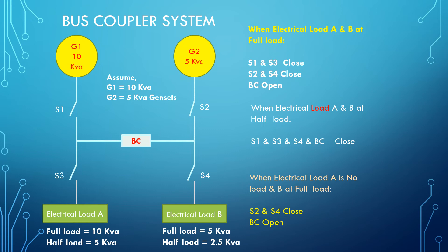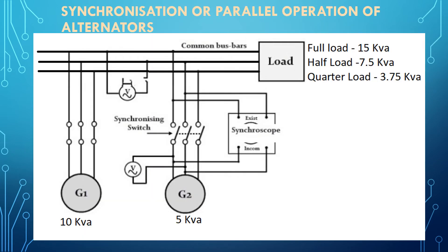This offline load sharing approach is a drawback of the bus coupler method. To resolve this, we use parallel operation — synchronization. Synchronization means two generators run in parallel to supply the load simultaneously.